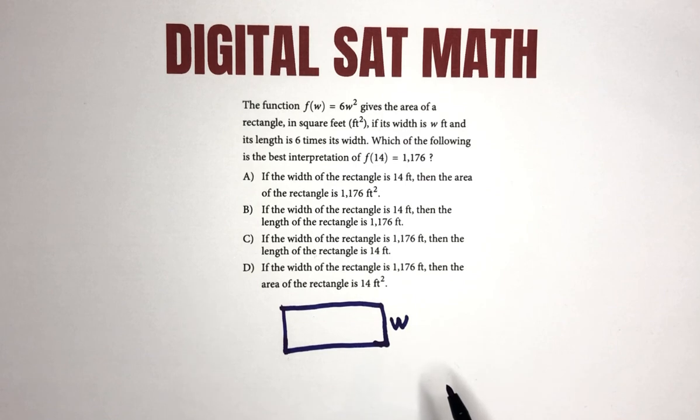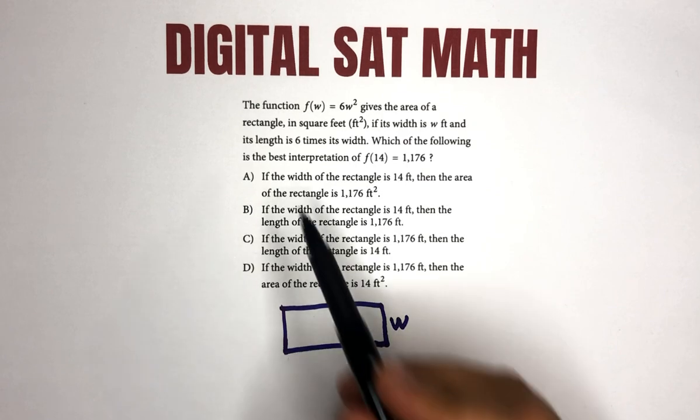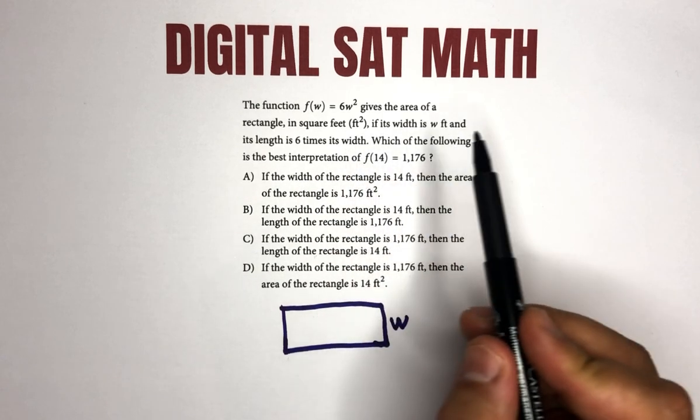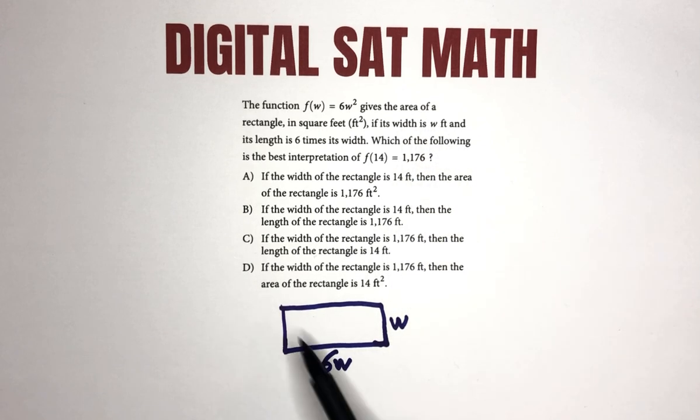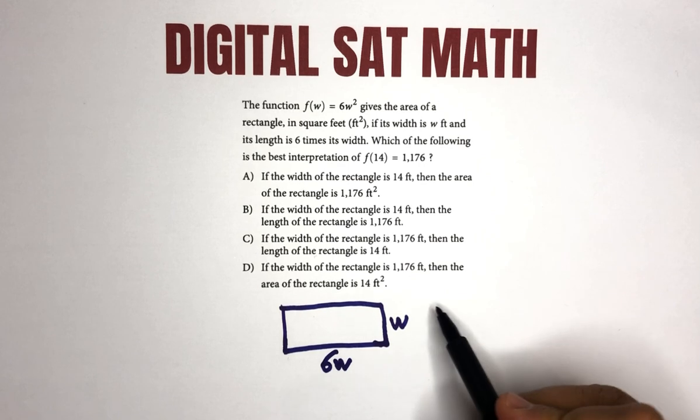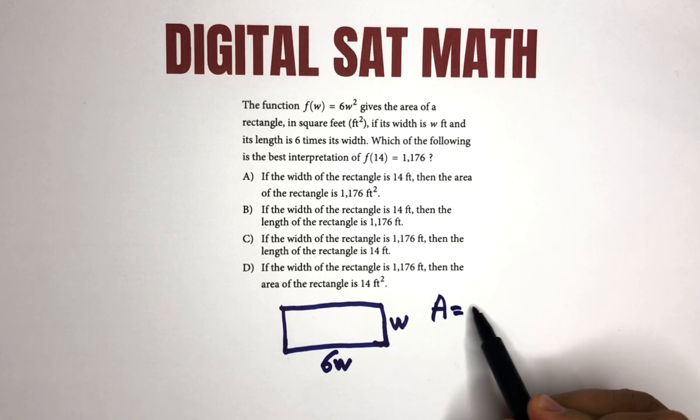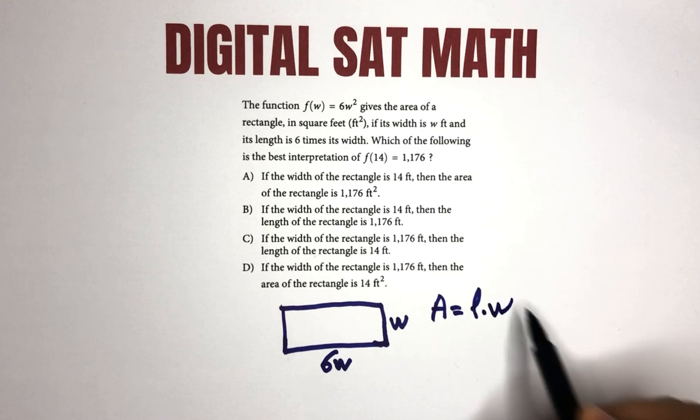And the length of the rectangle is six times its width, which is 6w. And to find the area of a rectangle, technically you're supposed to multiply. Area of a rectangle is length times width, right?